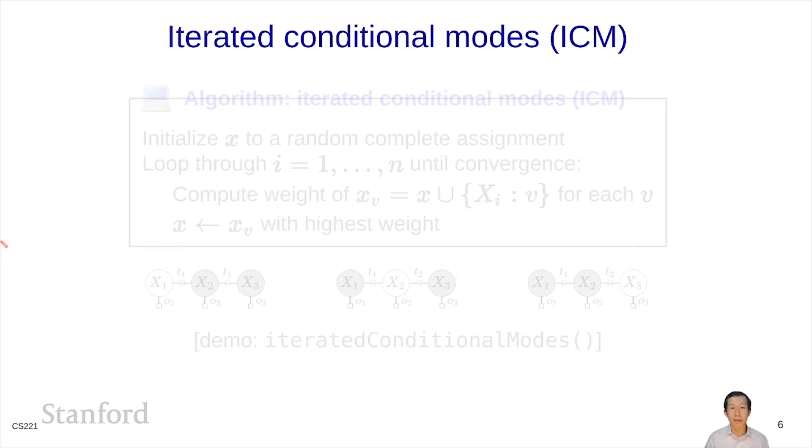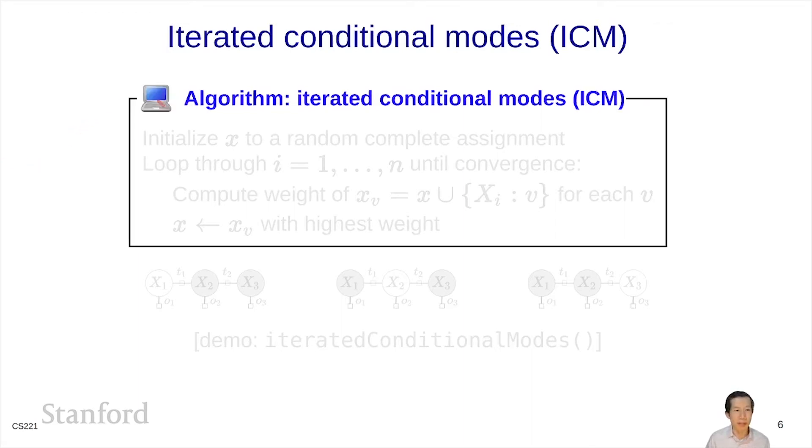Now we're ready to define our local search algorithm, which is called iterated conditional modes. Sounds fancy, but it's really simple. The idea is that we're going to start x to be a random complete assignment, and we're going to loop through x1 through xn and then keep on going until we converge or we run out of time.